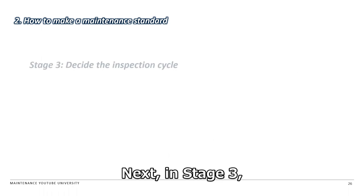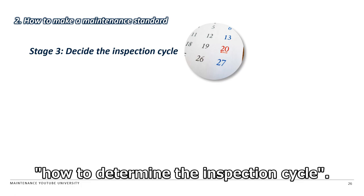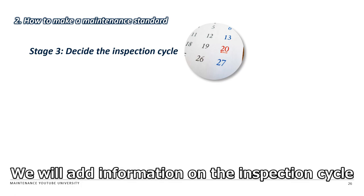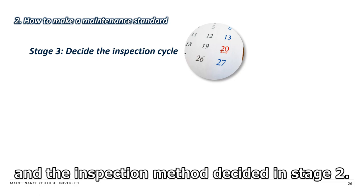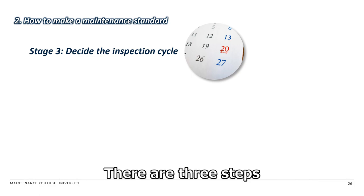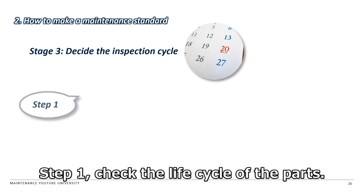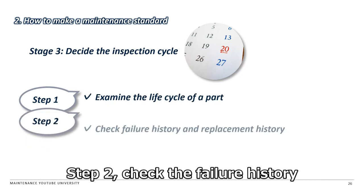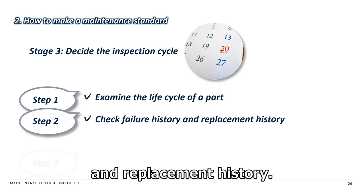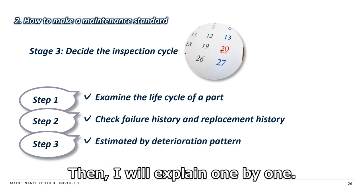Next, in Stage 3, I will explain how to determine the inspection cycle. We will add information on the inspection cycle to each inspection item identified in Stage 1 and the inspection method decided in Stage 2. There are three steps in determining the inspection cycle. Step 1: Check the life cycle of the parts. Step 2: Check the failure history and replacement history. Step 3: Estimate from the deterioration pattern of the parts. I will explain each one by one.